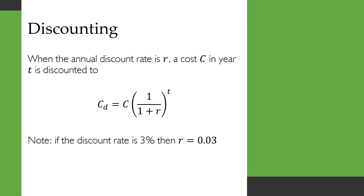Here's the formula for discounting. When the annual discount rate is R, a cost C in year T is discounted according to this formula. We take the original cost C and multiply it by a discount factor, which is 1 divided by 1 plus R, all raised to the power of T. Just a note: if the discount rate is 3% per year, then R would be 0.03.